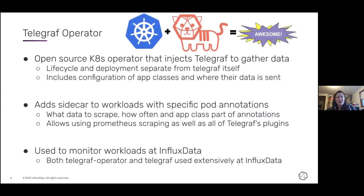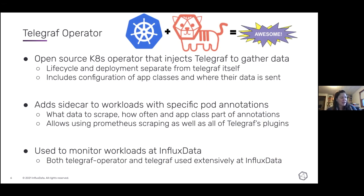The Telegraf Operator packages the operational aspects for deploying a Telegraf agent on Kubernetes. It's a sidecar container based on annotations, and it provides the Telegraf configuration to scrape exposed metrics — all defined declaratively. It allows you to define common output destinations for all your metrics, so you can send it to InfluxDB or elsewhere.